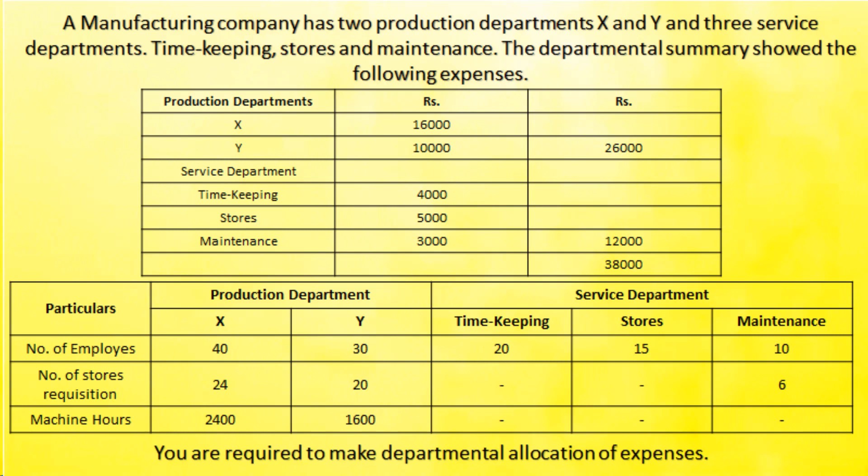They have also given the number of employees in production departments X and Y, the number of store requisitions, and machine hours worked. Based on all this information, we need to prepare an overhead secondary distribution — it is called secondary distribution because we are distributing the cost of service departments to the production departments. Now let us see how to solve this problem.